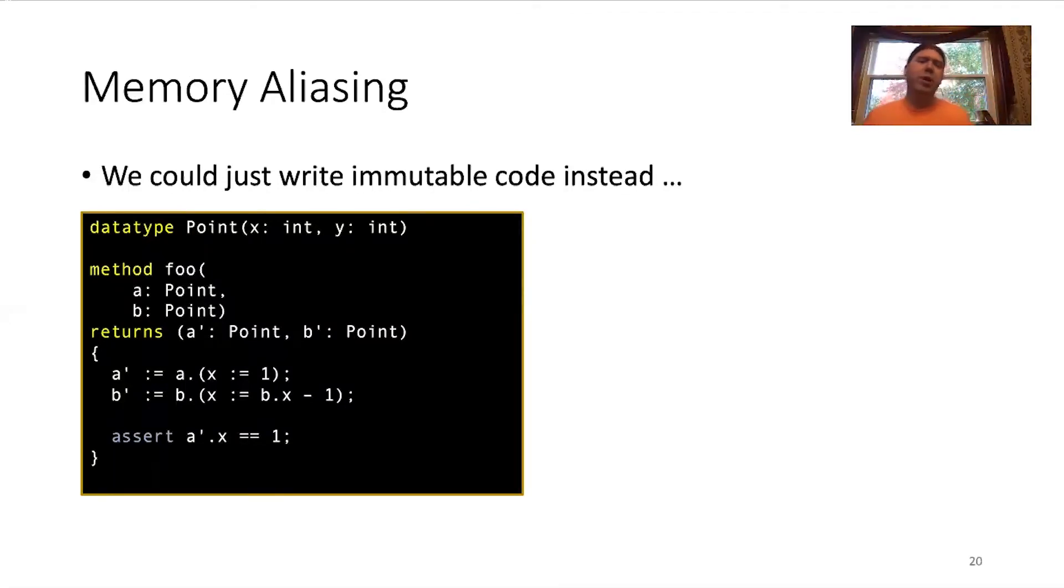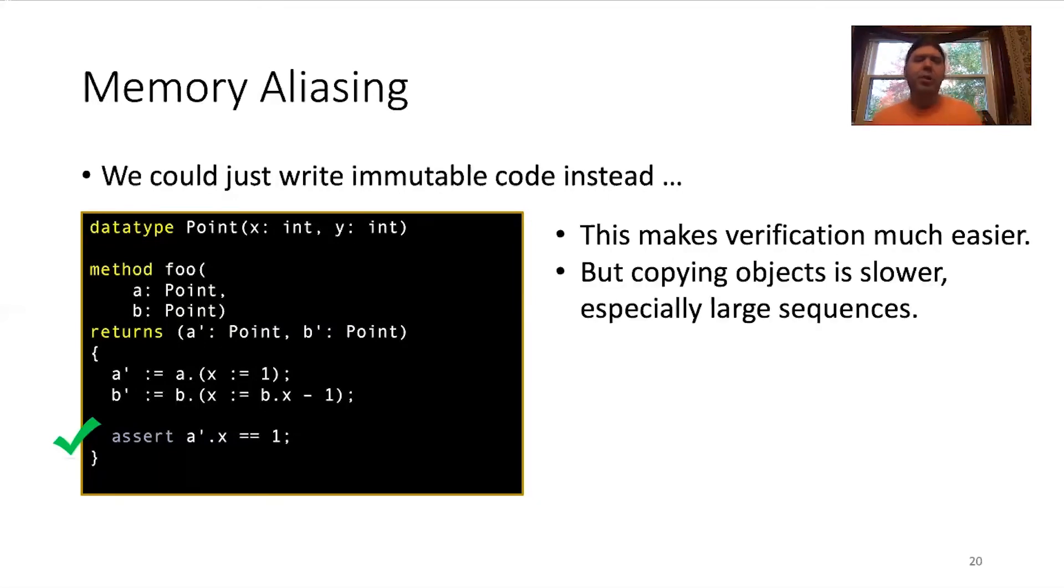And one thing we could do about this is we could try to write immutable code instead. Here, we don't modify a and b directly. Instead, a and b are immutable data types now. And we're simply creating new objects rather than modifying the existing ones. And so, now the verification is much easier. A prime can't possibly be modified. So the verifier just didn't even have to consider that. But now, copying objects is much slower, especially when we're dealing with large sequences. We can't just be copying these large sequences around for the sake of writing immutable code that's easier to verify.